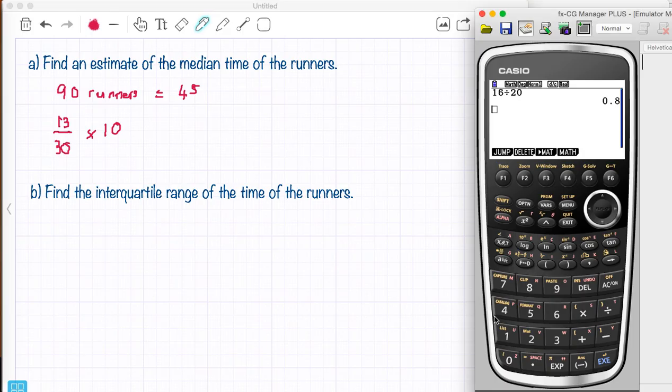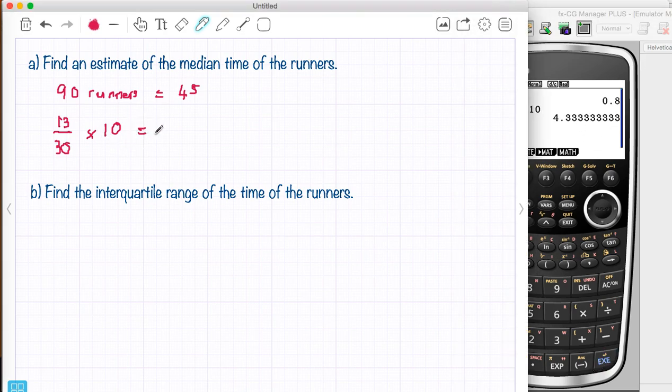So I'm going to do all that and I'm almost finished once I've done that. So 13 divided by 30 times it by 10 gives me 4.3.